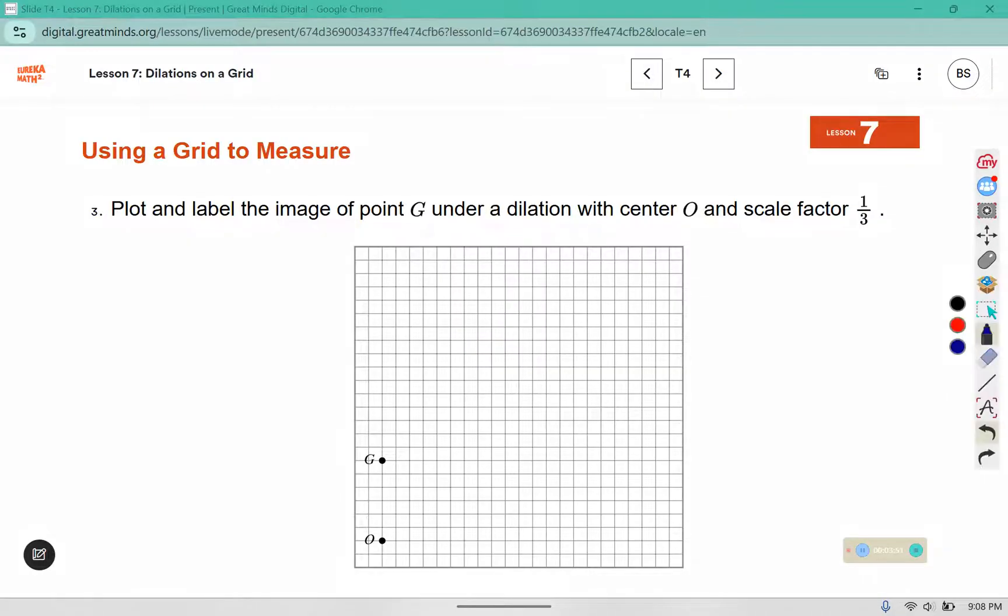Plot and label the image of the dilation under a scale factor of 1 third. So this distance from O to G is 1, 2, 3, 4, 5, 6. 6 times 1 third, that would be 6 over 3 or 2. So it is 2 from O and label it with G prime.